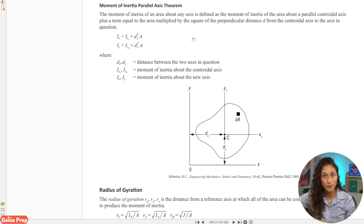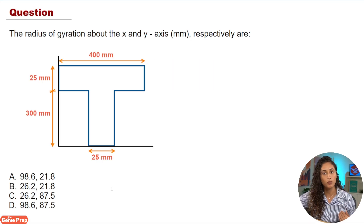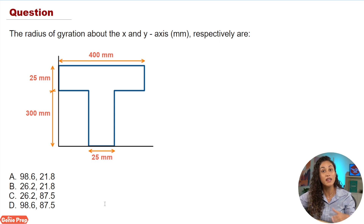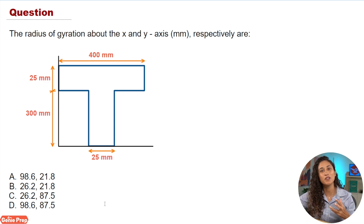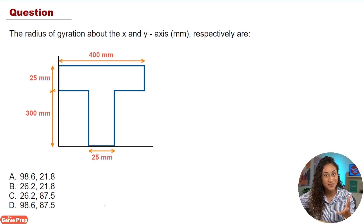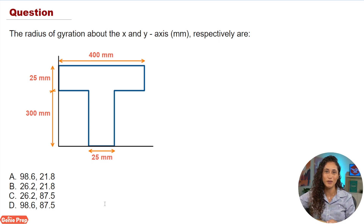To find the moment of inertia about the central x and y axes we'll need to use the parallel axis theorem. In a previous problem we already solved for the moment of inertia about the central x-axis, so make sure you watch that video first. Then find the moment of inertia about the central y-axis and from there you can easily find the radius of gyration. Go ahead and pause and give this a try.